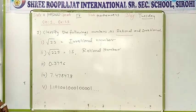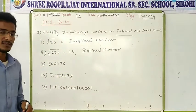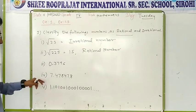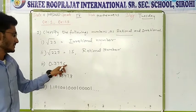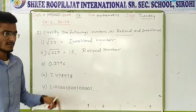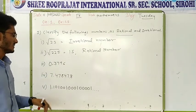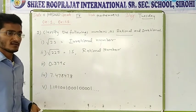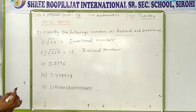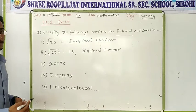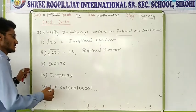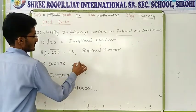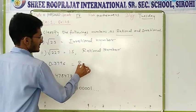Next one: 0.3796. Here you can see the digits end at 6 as the last digit. That means it is terminating. So it will be a rational number.